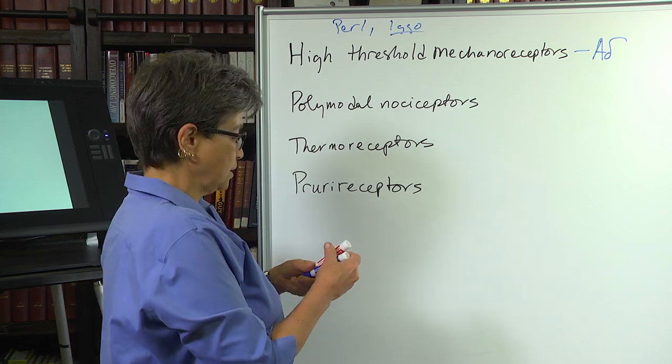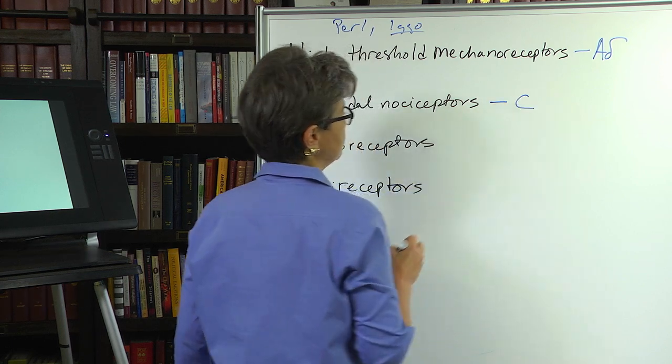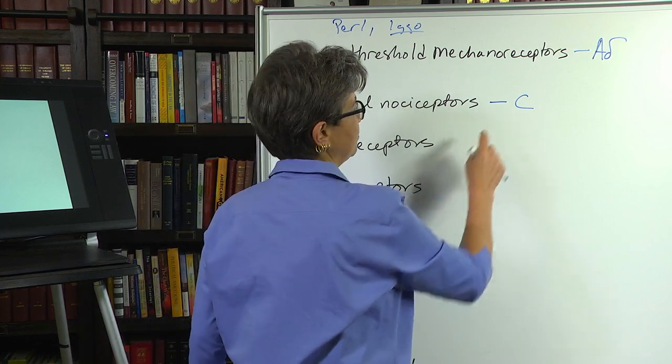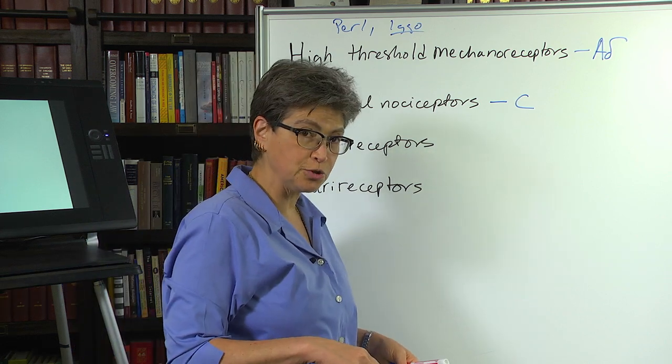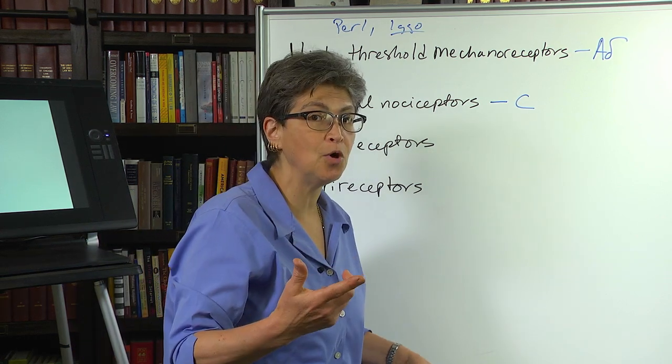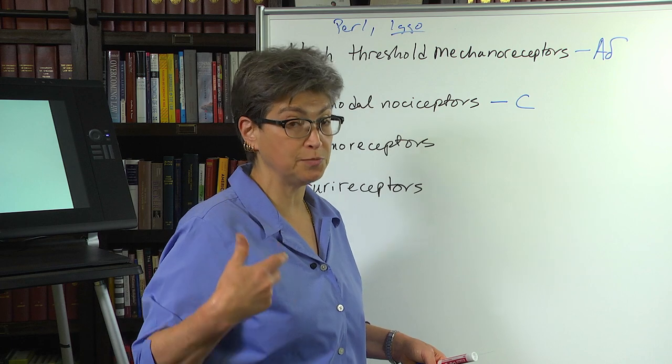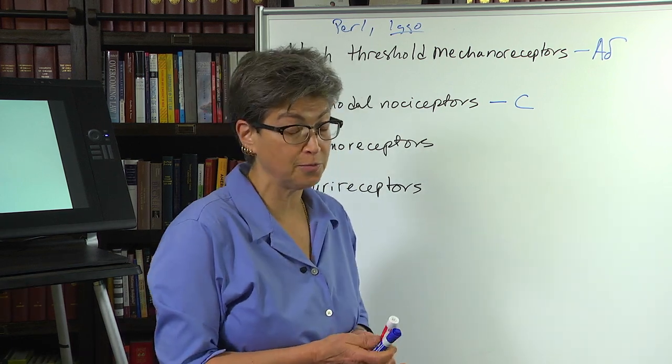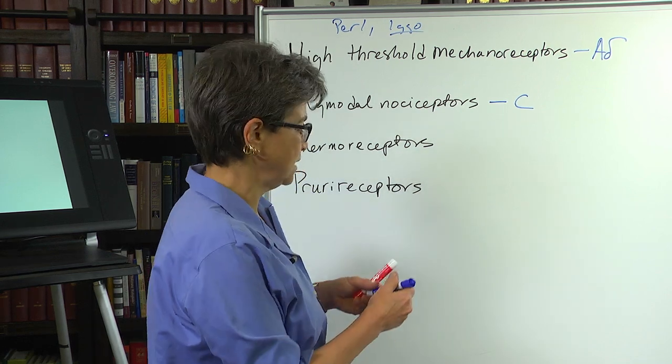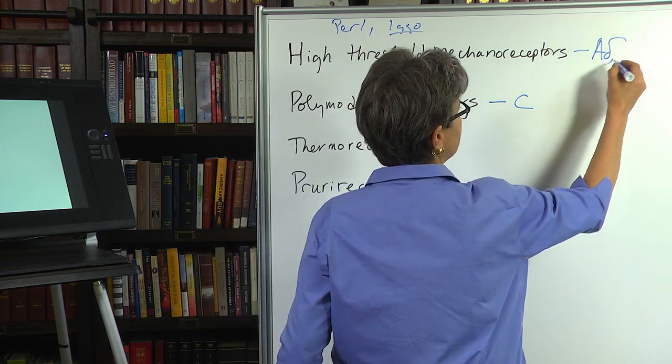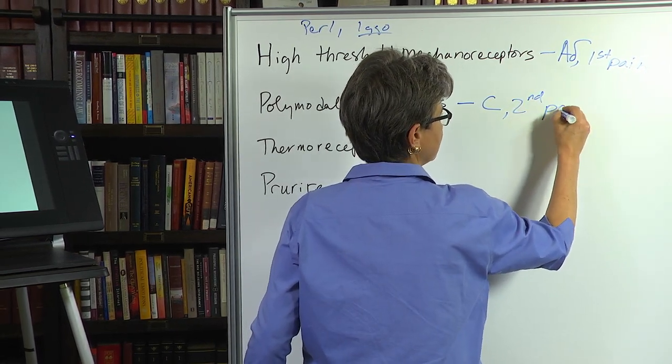Now, the other major type of nociceptor are these polymodal nociceptors. And the polymodal nociceptors are C-fibers, so they're really slow. So when you stub your toe, you find out that you stubbed your toe, and then it's only a moment later, a demonstrable second or two later, because of the slow transmission of action potentials by C-fibers, that it starts hurting, that achy hurt. And this is typically termed first pain and second pain, first and second in time.